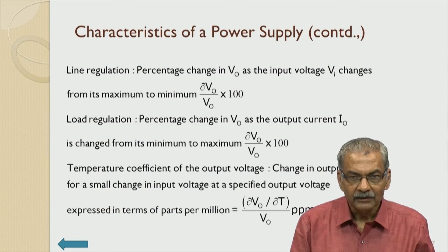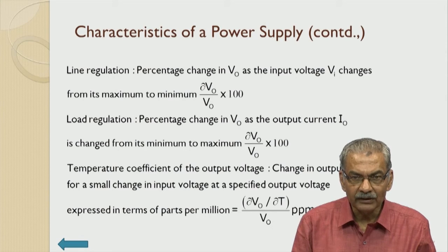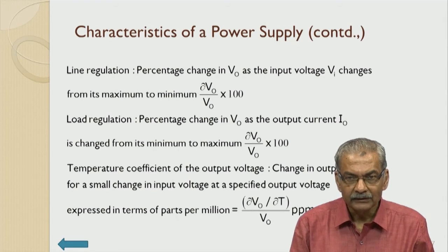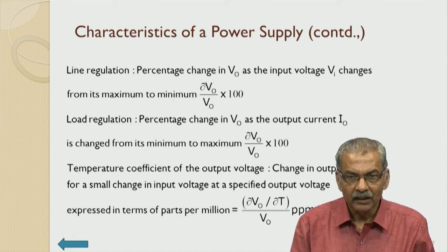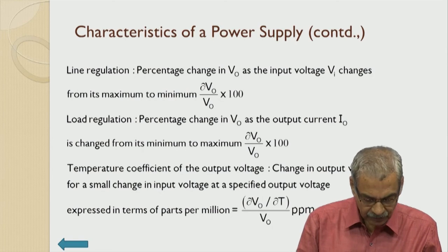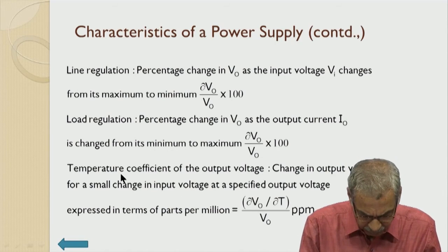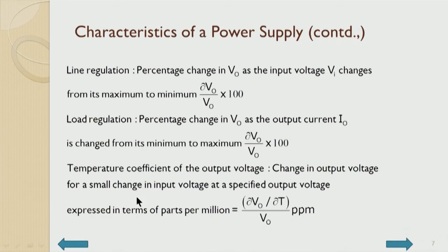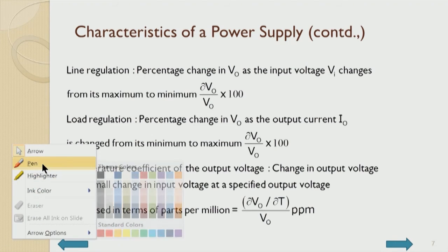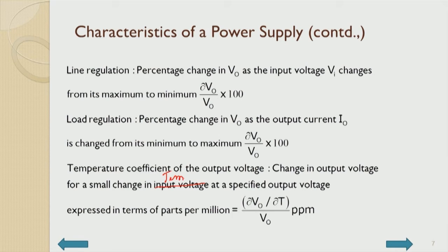Temperature coefficient of output voltage is an important criterion — it is the change in output voltage for a small change in temperature at a specified output voltage, expressed in parts per million: ΔV_out/ΔT around a specific output voltage.